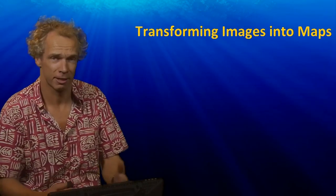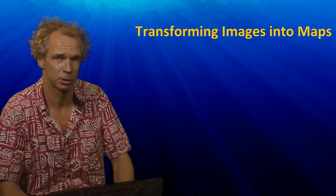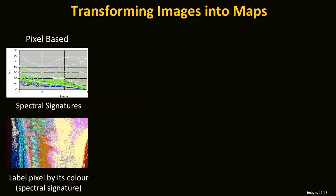Stuart was just talking about characteristics of different satellite imagery. These characteristics will be used to create maps. For creating maps there are different approaches. The first is a pixel-based approach, where every pixel is characterized by specific spectral signatures, as Stuart introduced earlier. If we know some of these spectral signatures, we can compare other pixels to see if they share the same spectral signatures. When pixels share the same characteristics, we're able to label them with the same category or color.